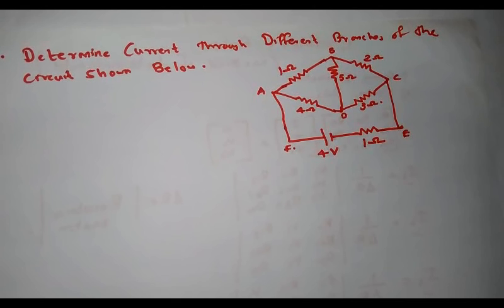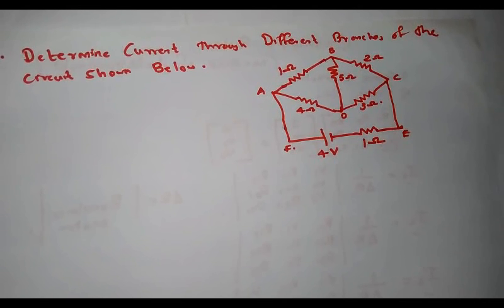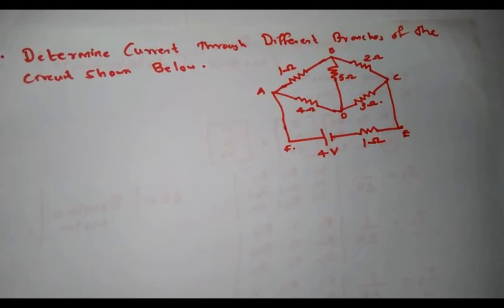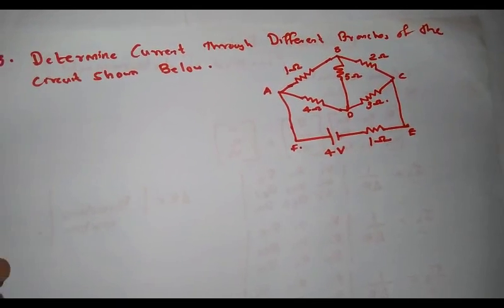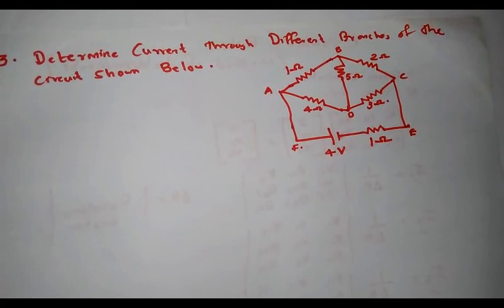The question is to find the current through different branches of the circuit shown below. All resistors are different branches, therefore we have to determine the current through each resistor. We have six resistors in total: 1 ohm, 4 ohm, 5 ohm, 2 ohm, 3 ohm, and again 1 ohm. I am going to solve this simple circuit by using mesh analysis or Kirchhoff's voltage law.